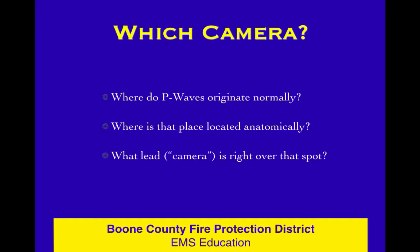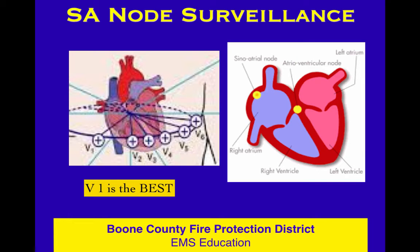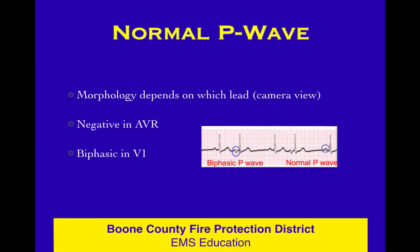Which of the 12 leads is focused on the P wave? Where do P waves come from, and what camera lead is right over that anatomically? P waves come out of the SA node, which is in the upper portion of the right atrium, and V1 — the camera in V1 is trained right on that. The very best lead on a standard 12-lead is V1 to get a good look at what's going on in the SA node.